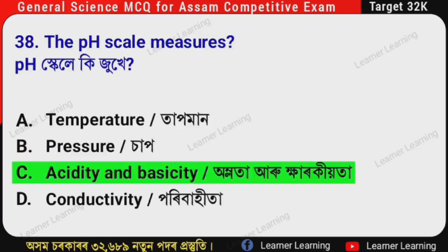The correct option is Option C — Acidity and basicity (om lo ta aru khara ki ho ta). The scale used to measure this is the pH scale.